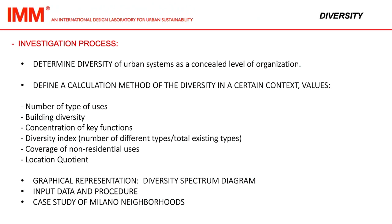this study aims at highlighting the morphological and typological properties of diversity by introducing a set of six quantitative metrics labeled as: number of types of uses, building diversity, concentration of key functions, diversity index, coverage of non-residential uses, and location quotient.